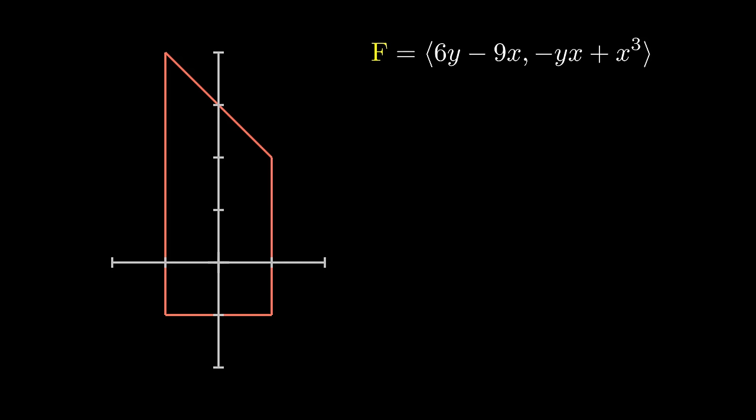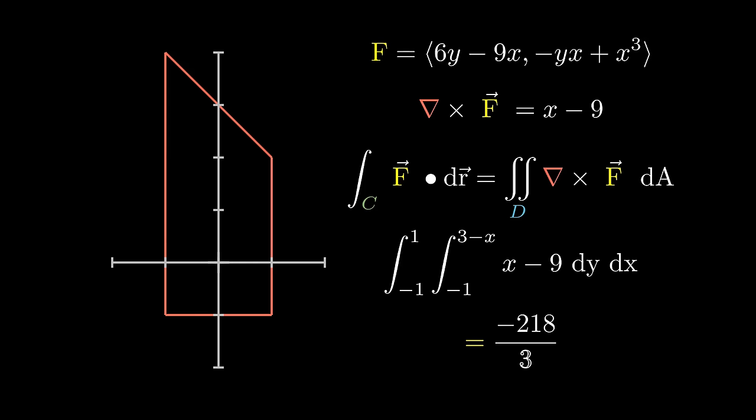So first, let's calculate the two-dimensional curl of the vector field. This is equal to x minus 9. Now, to evaluate this line integral, we need to evaluate the double integral of x minus 9 over R. The top line is y equals 3 minus x and the bottom line is y equals negative 1. The x limits are from x equals negative 1 to 1. So the double integral is equal to this. Plugging it in, we get negative 218 over 3.